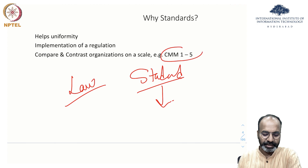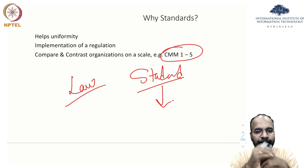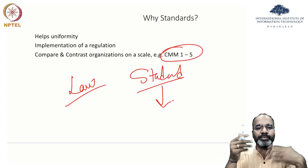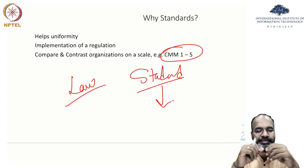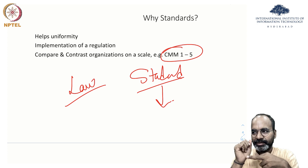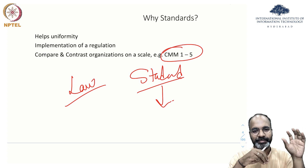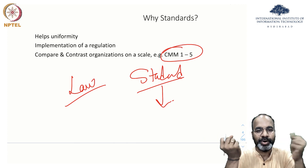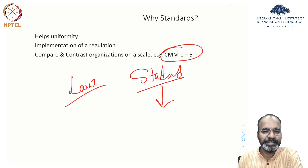In terms of implementation of a regulation and comparing organizations, CMM — Capability Maturity Model — came out for software engineering. CMM levels 1 to 5 give you a sense of where a company is. At level 5, everybody understands secure coding and the information that is collected. CMM is for programming and how well they write programs, but it's a useful comparison — like grades: A, B, C, D, or NPTEL's 90%, 75%, 60%.